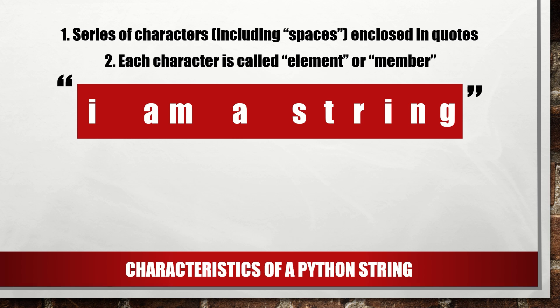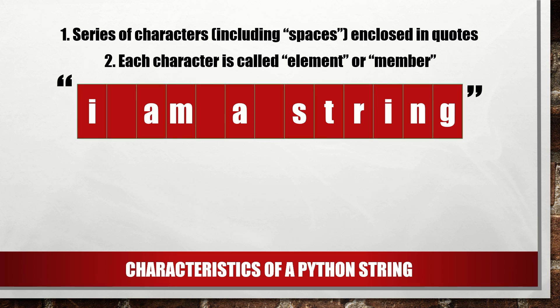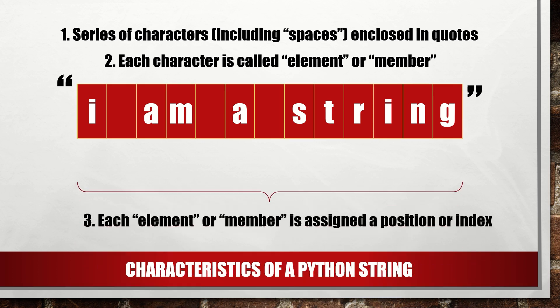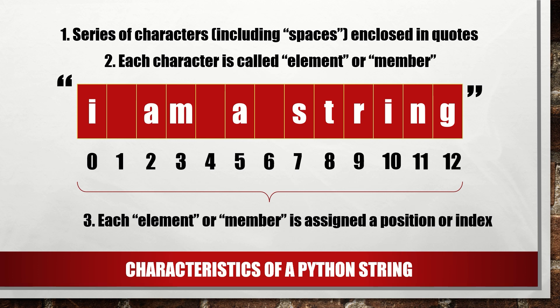A string is in fact a collection of characters. These characters are individually called an element or member. Each element in a string occupies a position, and that position is indicated by a number or index. The first character in a string is assigned the index or position zero.